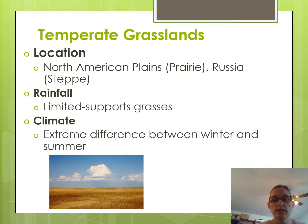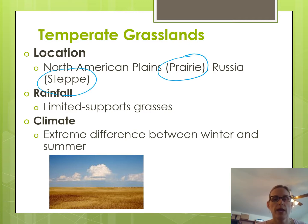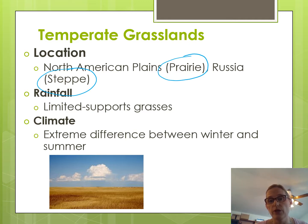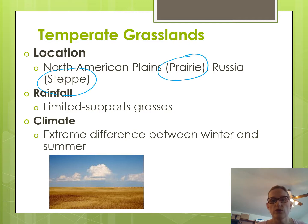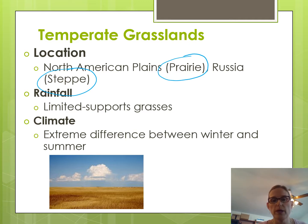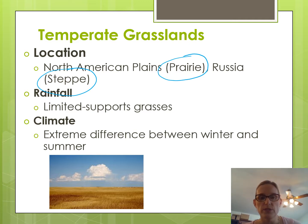The next biome is the temperate grasslands. In America, we call it the prairie; in Russia, they call it the steppe. When you don't have a lot of rain, you can't grow many trees. This biome has limited rain — it does get big thunderstorms and snowstorms, but not quite enough to support a big forest, so it supports a lot of grasses instead.